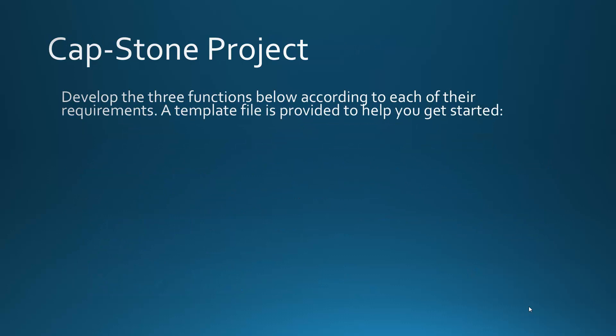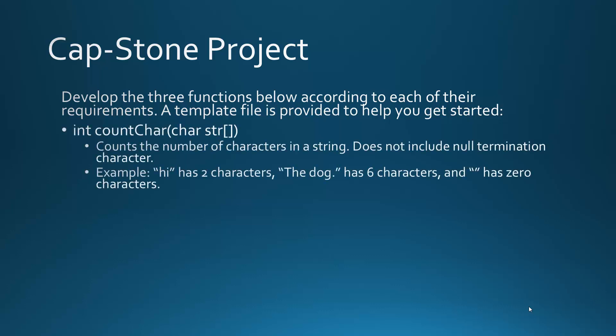For the capstone project, we're going to develop three functions listed below according to each of the requirements. There is a template file provided online to help you get started. The first one we're going to implement is `count_char`. It takes a parameter of an array of characters and returns the number of characters in that string. It will not take into account the null termination character. So 'hi' has two characters, 'the dog.' has eight characters, and an empty string will have zero characters.